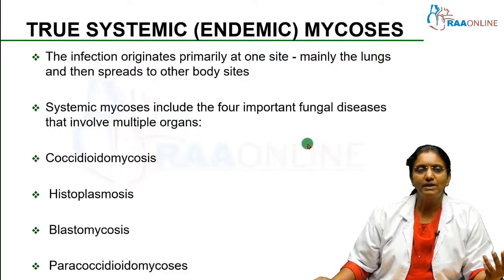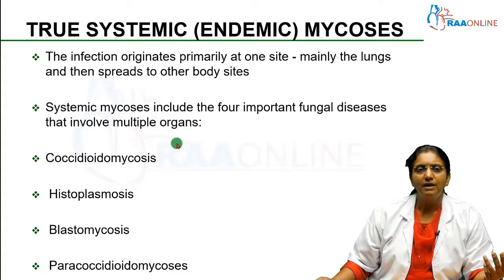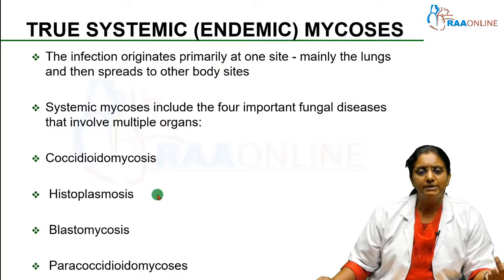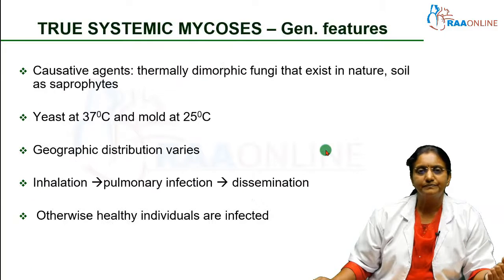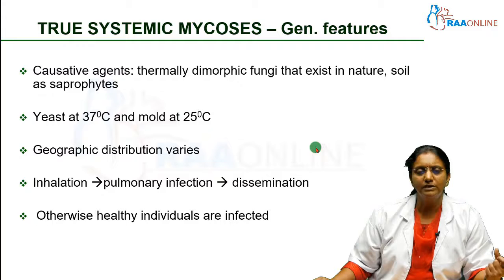Systemic mycosis includes these four important fungal infections which can cause multiple organ involvement in addition to the lungs: coccidioidomycosis, histoplasmosis, blastomycosis, and paracoccidioidomycosis. The terms are a little difficult but it is good to know these. The common feature which puts all these four organisms together is that all of them are thermally dimorphic fungi.